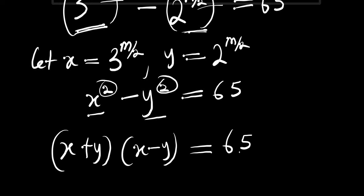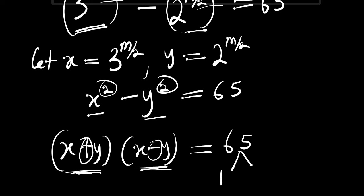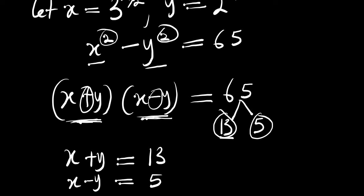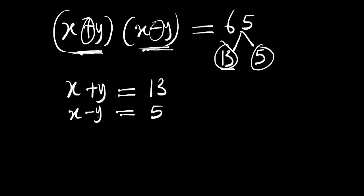The next thing we are going to do is split 65 into two parts. The addition part will be bigger than the subtraction part. We are going to use 13 times 5, because 13 will equate to x plus y as the bigger number, and x minus y we equate with 5. So we have x plus y equals 13 and x minus y equals 5. The next step is to solve and find the value of x by adding these two equations, since the coefficients of x are both 1.